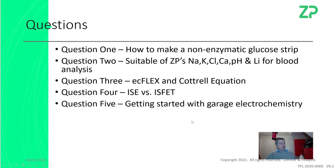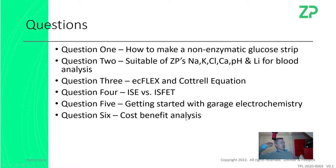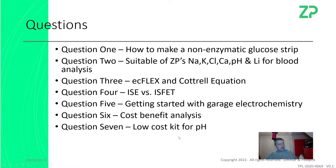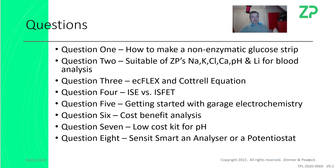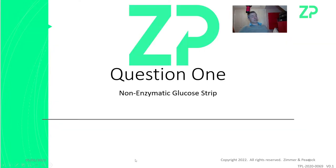Getting started with garage chemistry — I'll talk about that. Cost-benefit analysis is an interesting and actually quite tough question. I'll give some thoughts and an example from one of our products. Low-cost kit for pH measurements — I'll touch on that. And the Sensit Smart: is it an analyzer or a potentiostat? It's a good question because the Sensit Smart could be underpowered for some applications.